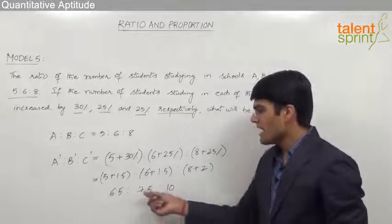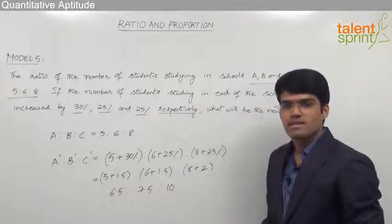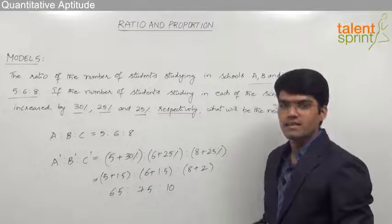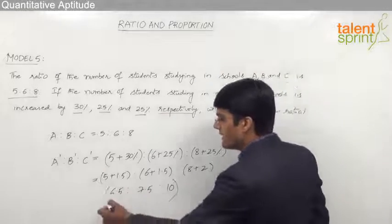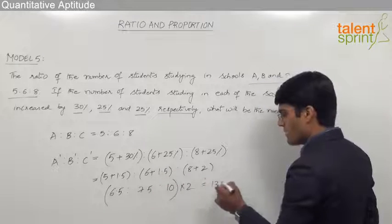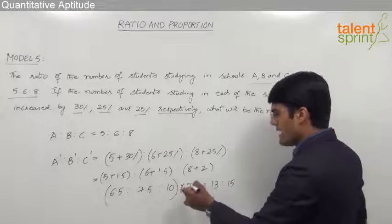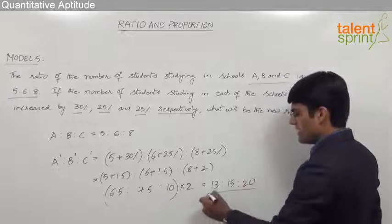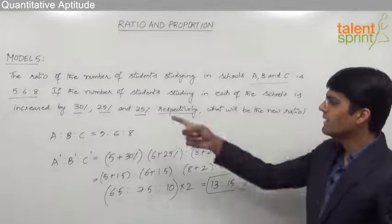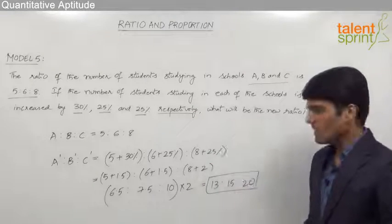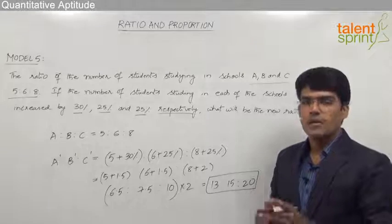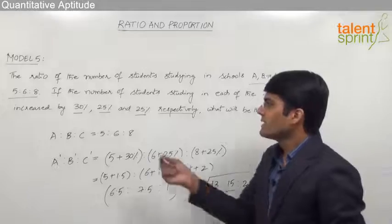This is not a proper ratio as we have decimal parts. So let us convert this into a proper ratio with integer parts by multiplying everything by 2. 6.5 × 2 = 13, 7.5 × 2 = 15, and 10 × 2 = 20. So the new ratio after the number of students in each school have increased by the given percentages is 13:15:20.